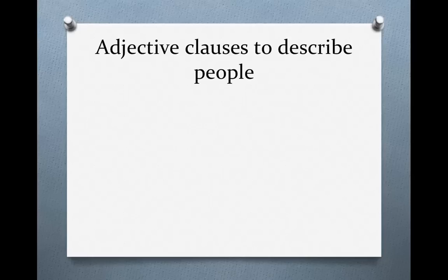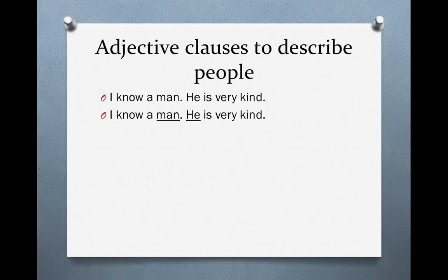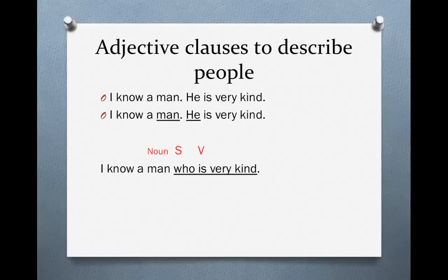Let's talk about different kinds of adjective clauses. We can use adjective clauses to describe people. For instance: 'I know a man. He is very kind.' These are two independent clauses. Man and he refer to the same thing — he in the second sentence is talking about man in the first sentence. So let's try this: 'I know a man who is very kind.' In this sentence we have an adjective clause: 'who is very kind.' The adjective clause begins with the relative pronoun who, which is replacing the word he. We have a subject, who, and a verb, is. The entire adjective clause describes the noun man, so it acts as an adjective.